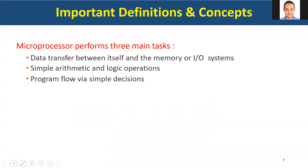Any microprocessor can perform three main tasks: data transfer, simple decision-making — basically controlling the program flow, like an if-statement in programming languages — and arithmetic operations like add, subtract, multiply, and divide.